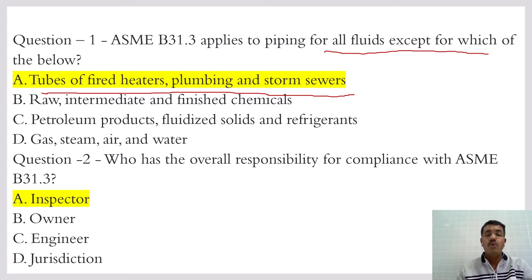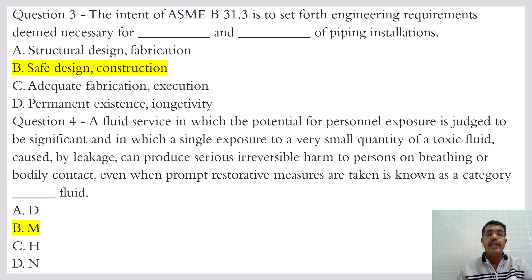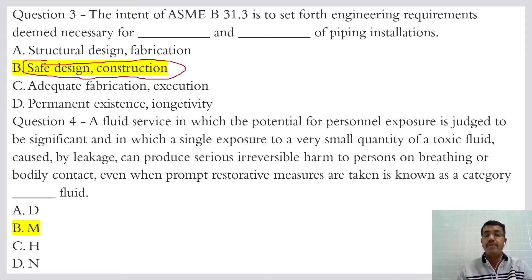Question number 2: Who has the overall responsibility for compliance with ASME B31.3? The owner has the responsibility to ensure it is complying with ASME B31.3. The intent of ASME B31.3 is to set forth engineering requirements deemed necessary for the safe design and construction of the piping installation.